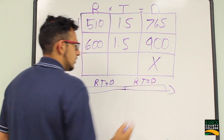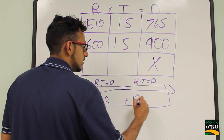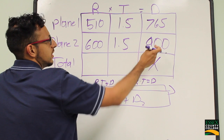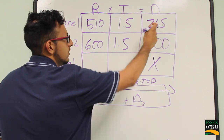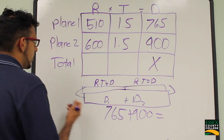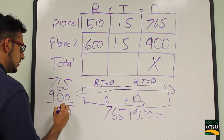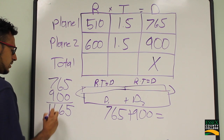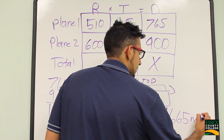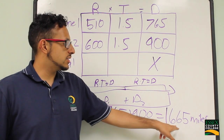Rate times time equals distance. The distance of plane 1 plus the distance of plane 2 equals the total distance. So we add 765 plus 900: 5 plus 0 is 5, 6 plus 0 is 6, 7 plus 9 is 16. So 765 plus 900 is 1,665 miles. That is the total distance — that's how far apart the two planes are after 1.5 hours.